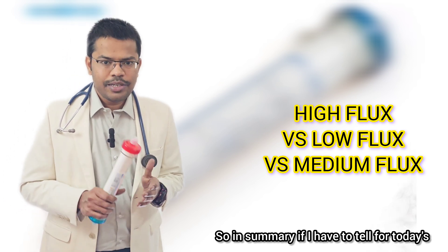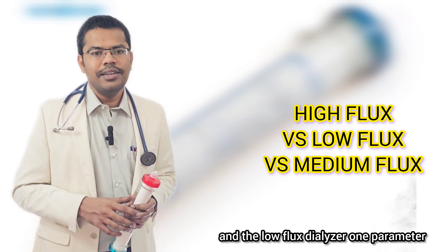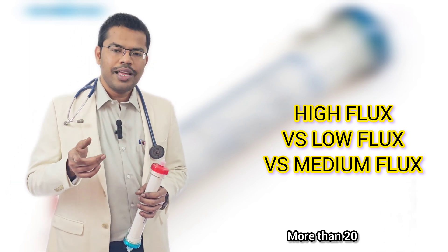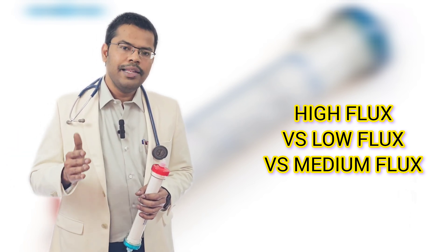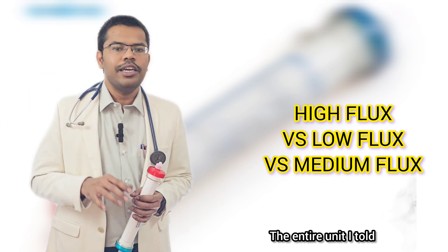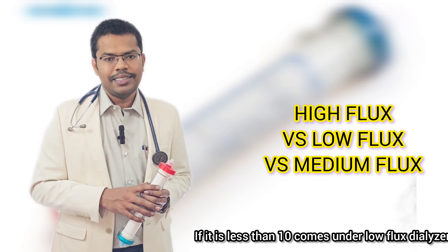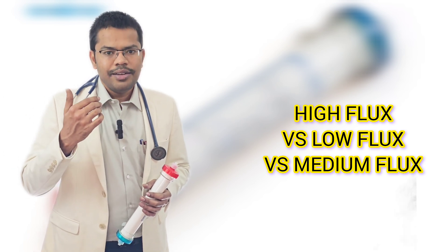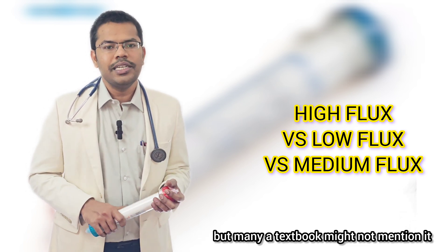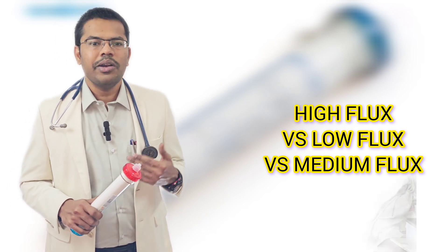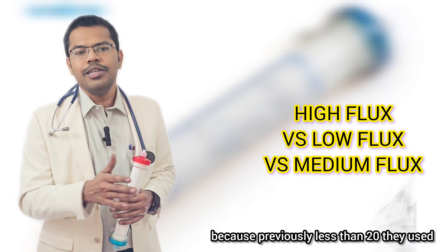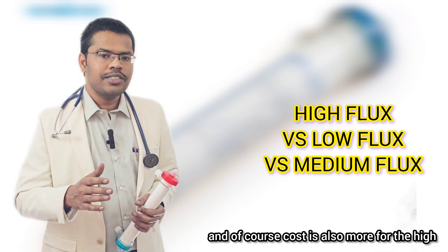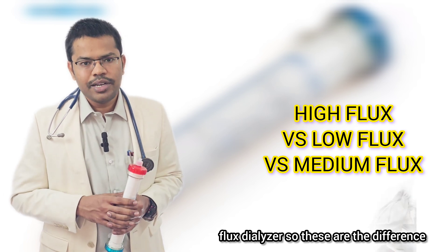In summary for today's episode on high flux, medium flux, and low flux dialyzers: the predominant deciding parameter is pore size, technically expressed as KUF or ultrafiltration coefficient. KUF more than 20 ml per millimeter of mercury per hour is high flux; less than 10 ml per millimeter of mercury per hour is low flux; between 10 and 20 is technically medium flux, though many textbooks may not mention this term. Molecular weight clearance and cost are both higher for high flux dialyzers.